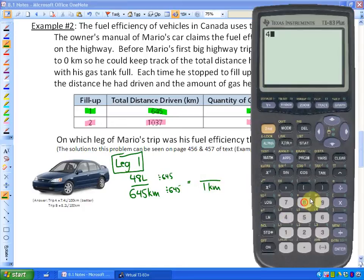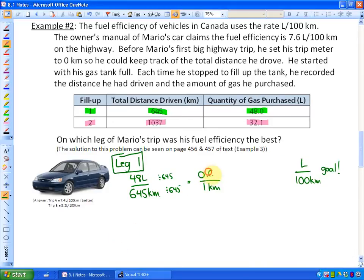So I'm going to do 48 liters divided by 645 kilometers. That's going to get me 0.074. So for Mario it takes 0.074 liters to travel one kilometer.